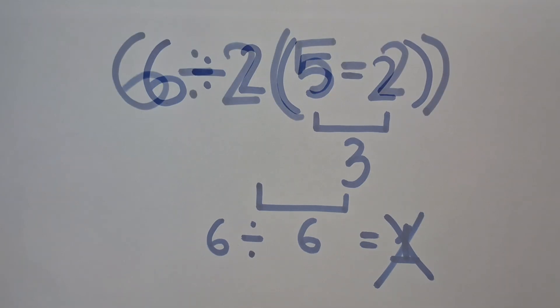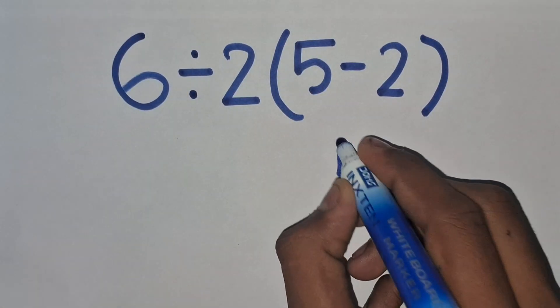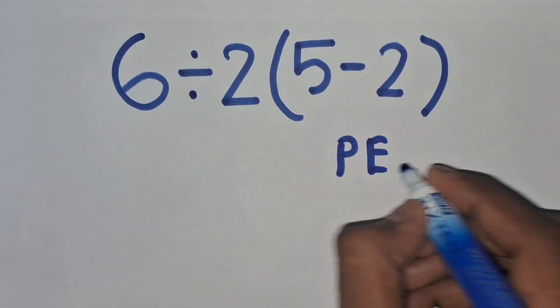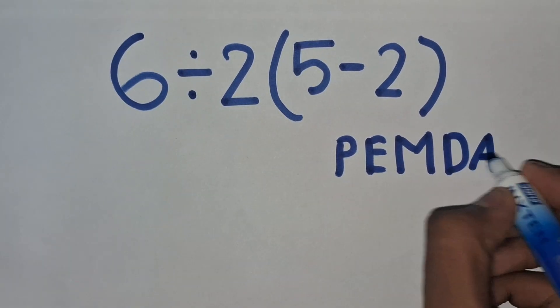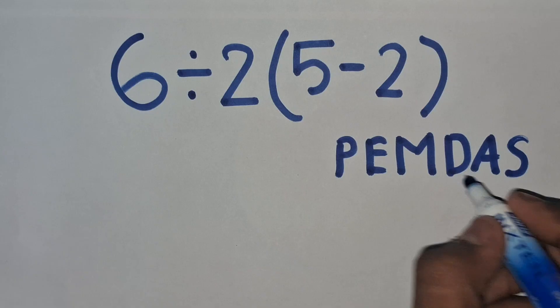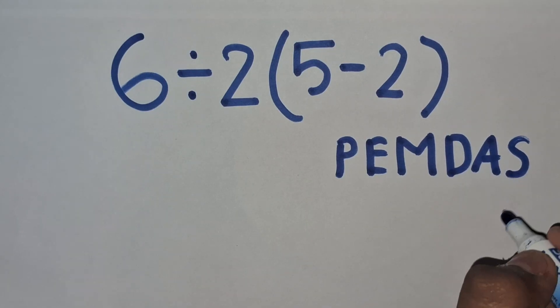According to the order of operations, which is called PEMDAS, where P stands for parentheses, E for exponents, M and D for multiplication and division, and A and S for addition and subtraction, we have to solve from left to right.